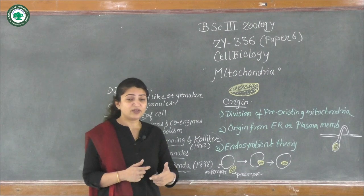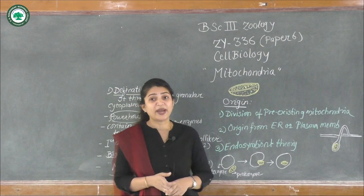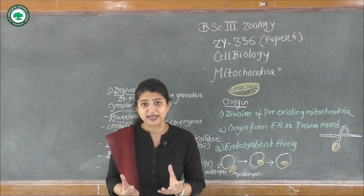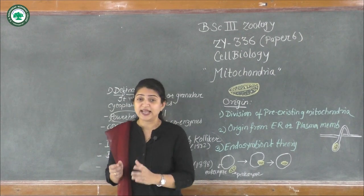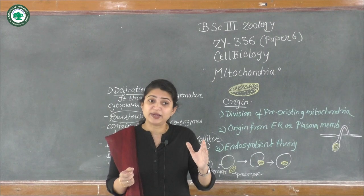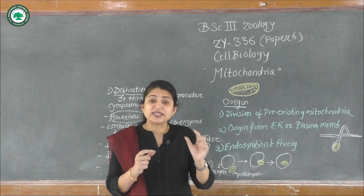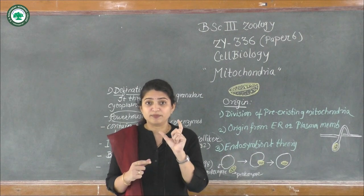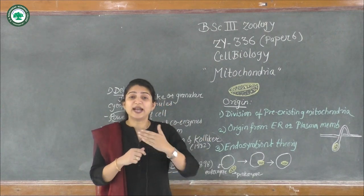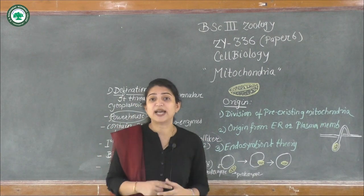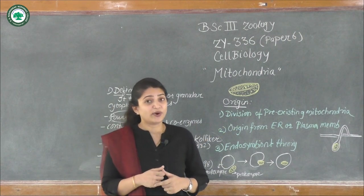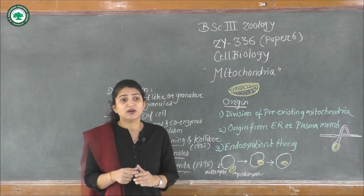One theory postulated the division of pre-existing mitochondria. In this theory, it was thought that a pre-existing mitochondria was already present in the cell, and later there was a splitting of that mitochondria into small pieces. Those smaller pieces then developed into mature mitochondrial structures. When the cell divides, this split structure also evolved as mitochondria in different cells. However, this theory was not accepted.